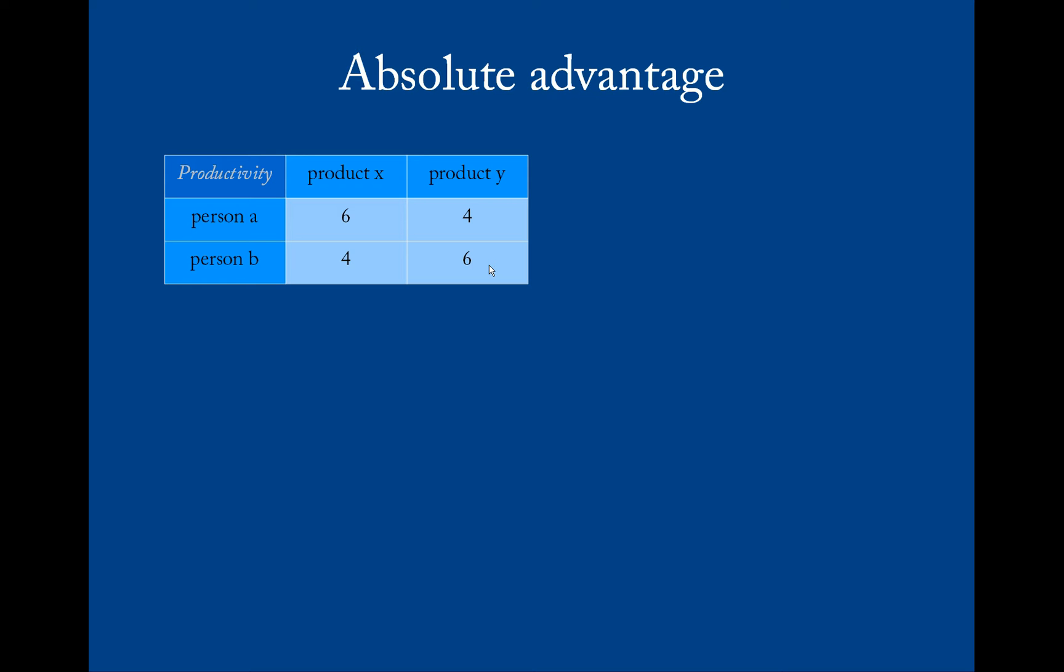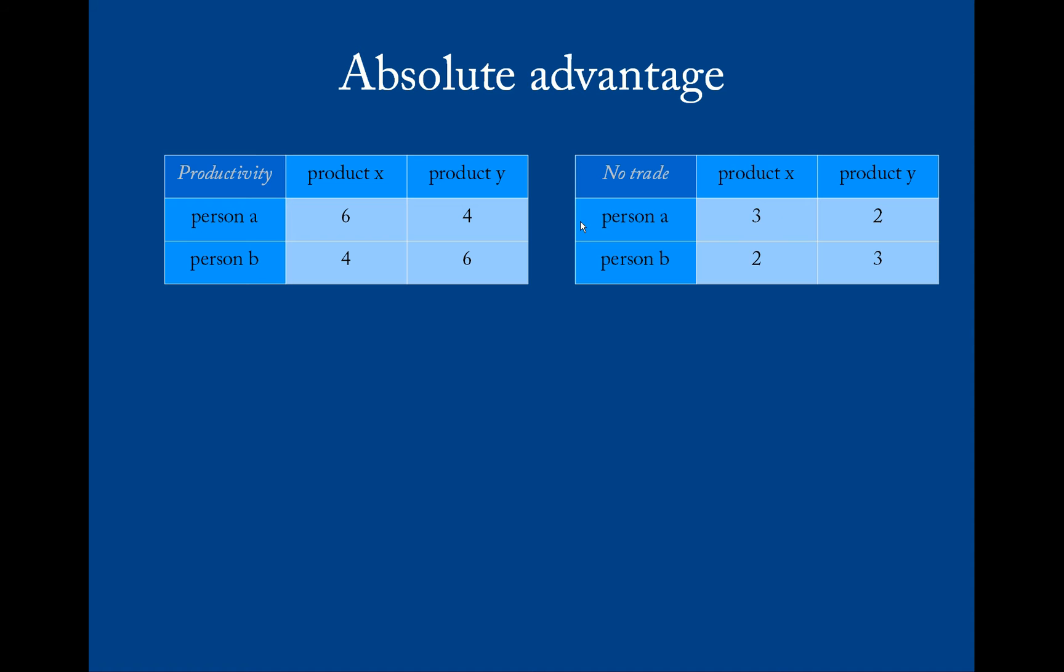Suppose this is the productivity to make things in one day. Now if they would split their time in half and both produce both product X and product Y in one day, the numbers would drop in half. Person A would produce three and two, and person B would produce two and three.